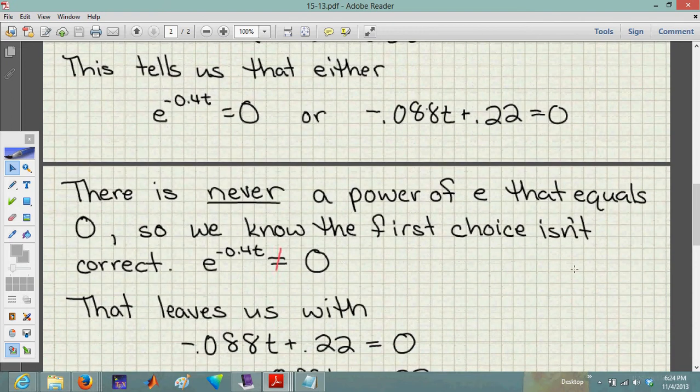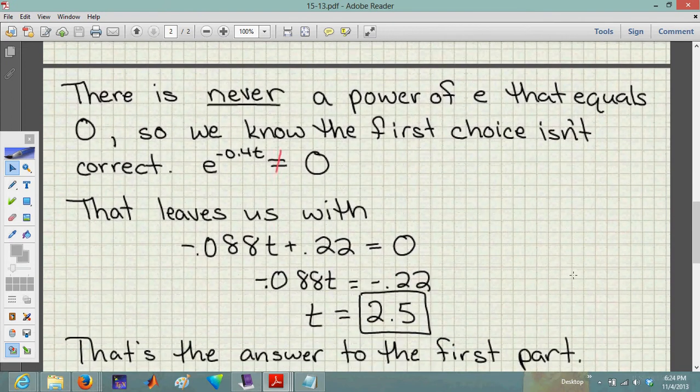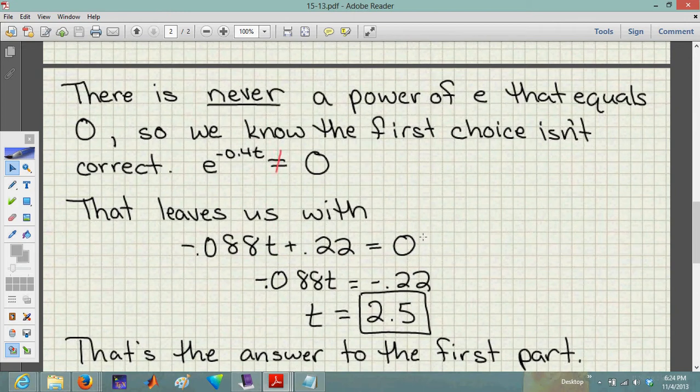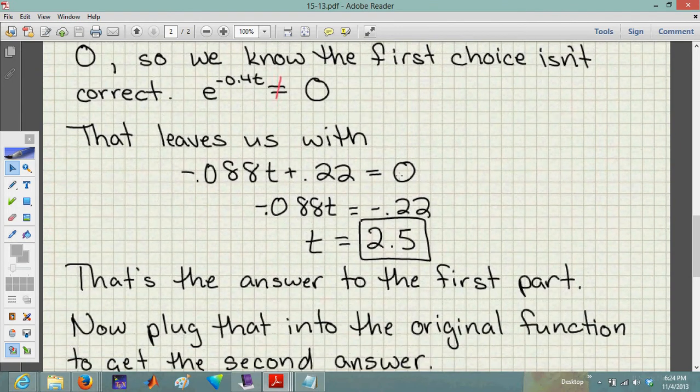So those are our two options. Either e to that power equals 0, or what was inside the parentheses equals 0. Well, here's the deal. There is no such power of e. You can't raise e to any power that will make it equal 0. E is never equal to 0 when you raise it to a power. So we know that the first choice isn't right. That's just wrong. This is like me saying 3 equals 2. It just can't happen.